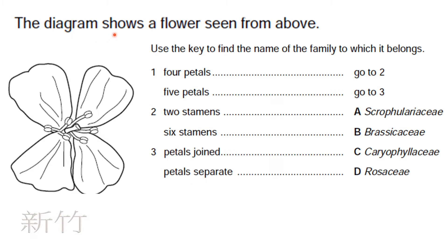The diagram shows a flower seen from above — use the key to find the name of the family to which it belongs. Looking at the petals: one, two, three, and four petals. In question two, you have to find the number of stamens — a stamen contains a filament and anther. Counting: one, two, three, four, five, and six — so it has six stamens. The answer is Brassicaceae, so the answer is B.